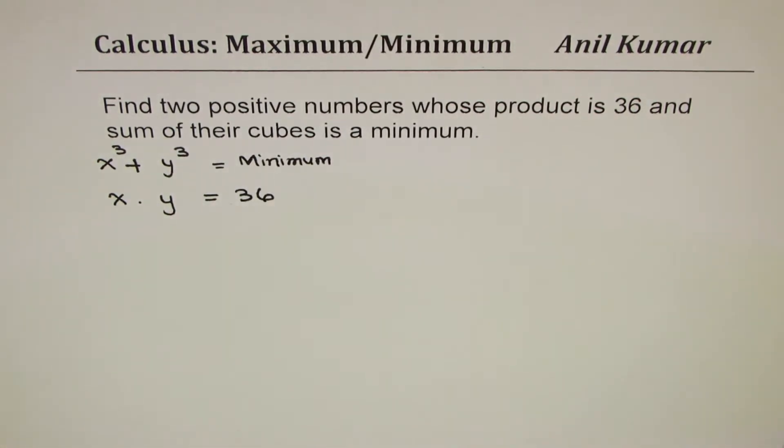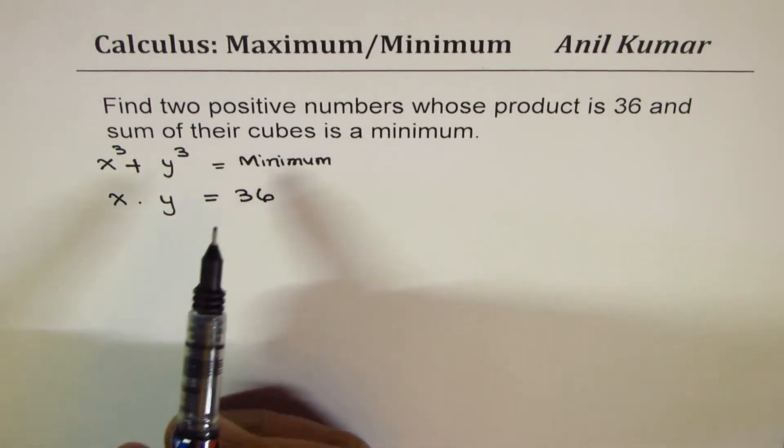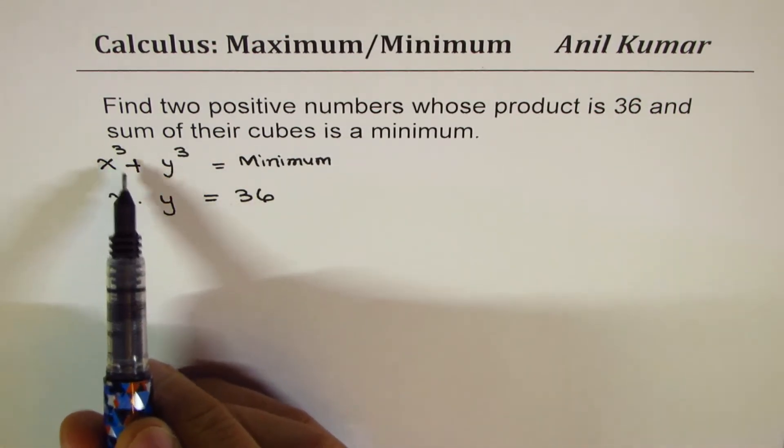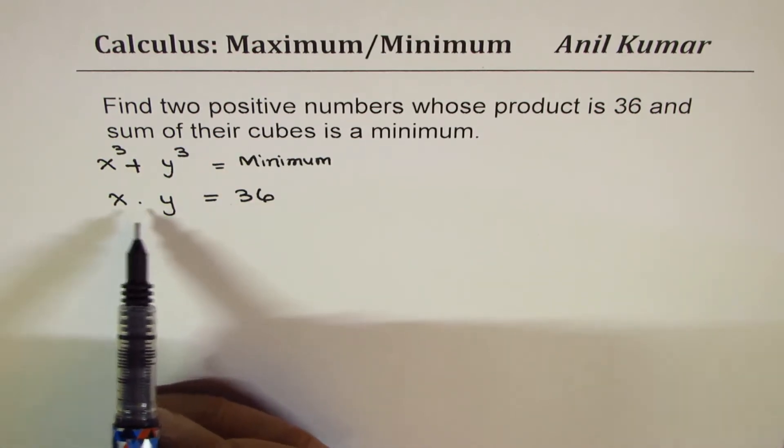Now how do we do it? We are going to apply implicit differentiation here to solve this question. We have two different equations - we want minimum for x³ + y³, so let me relate dx dy from equation number two.